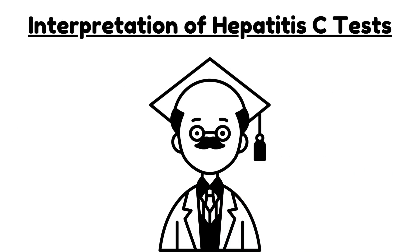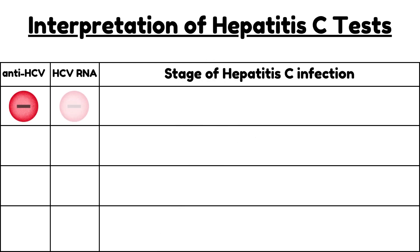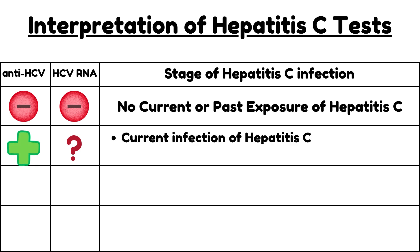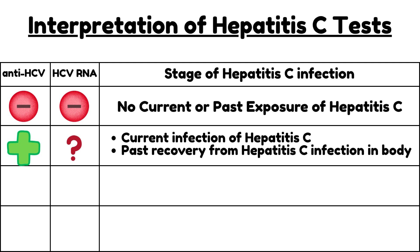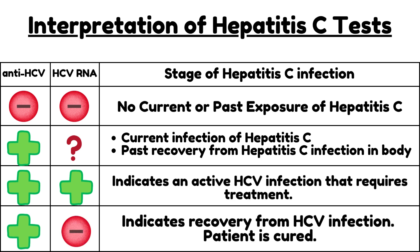Interpretation of Hepatitis C tests: If the test shows no antibodies and no RNA, this means no current or past exposure to Hepatitis C. If the test shows positive antibodies, this indicates either a current infection or past recovery from Hepatitis C. If the test shows positive antibodies and positive RNA, this indicates an active Hepatitis C infection that requires treatment. If the test shows positive antibodies and negative RNA, this suggests a past infection with successful recovery — the person is cured.